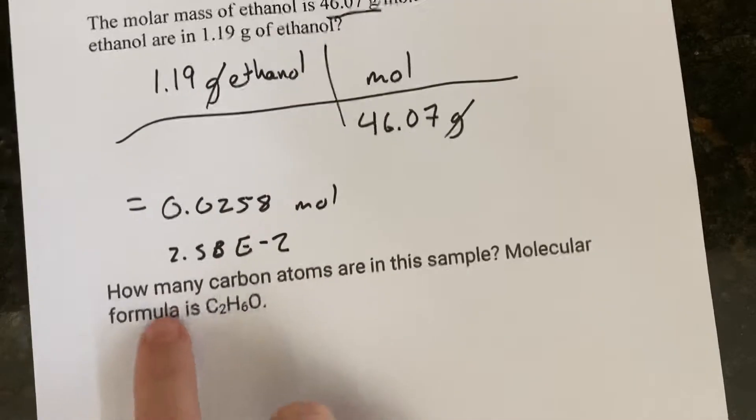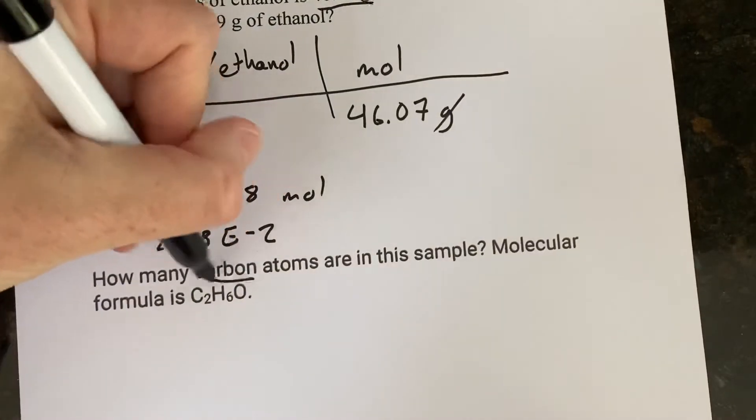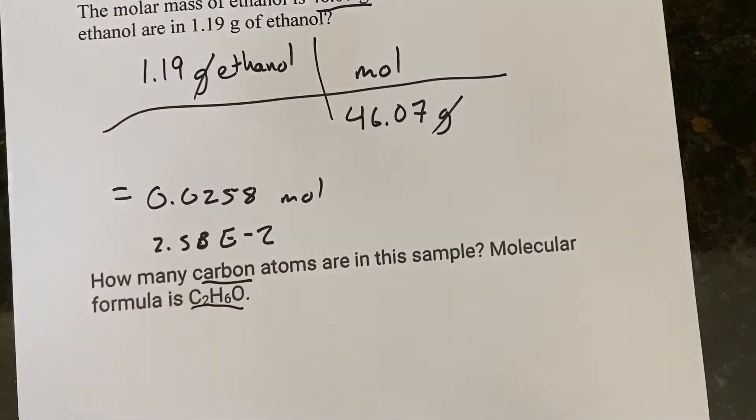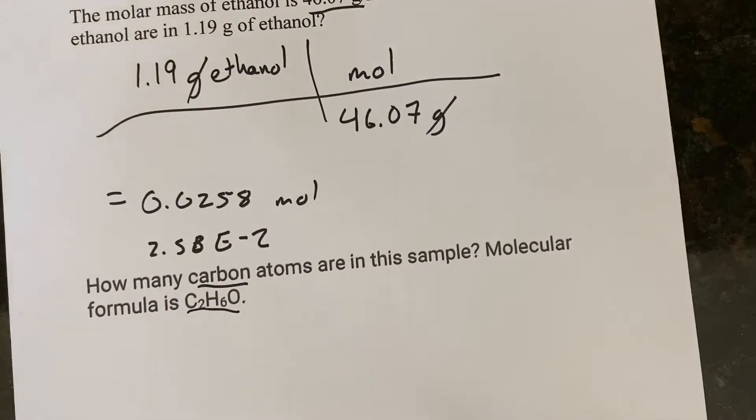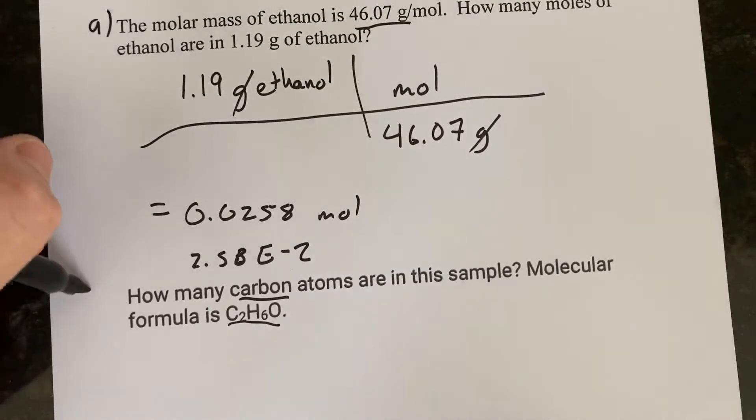All right, the next question says, how many carbon atoms are in the sample? And now it gives you the formula, is C2H6O. So this is kind of like part A, and this is part B.